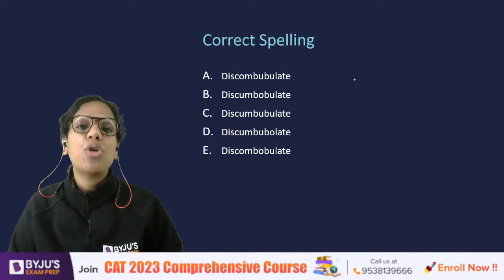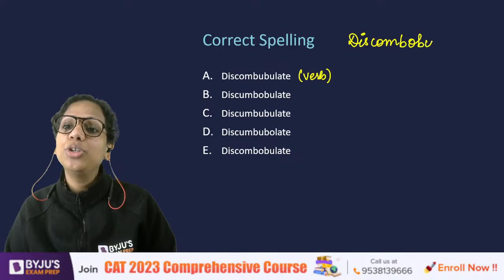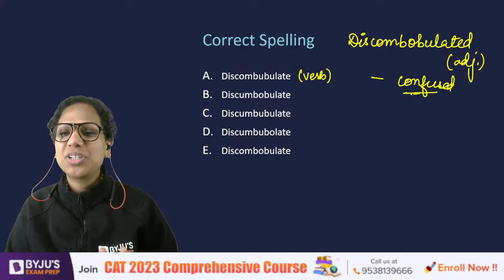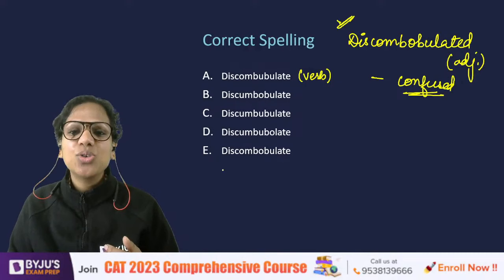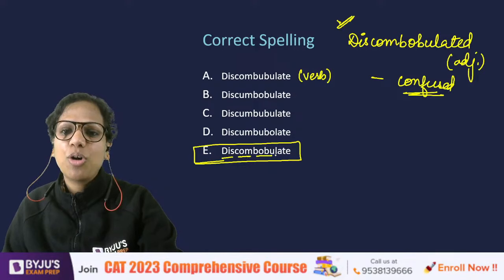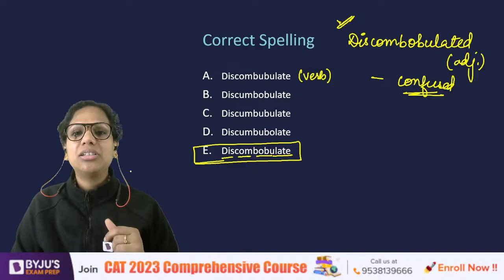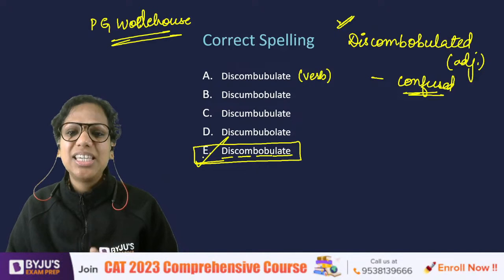Spelling questions are 10-second questions in the exam. Discombobulate is not a high-frequency word; you'd find it in older novels like P.G. Wodehouse. Do practice difficult spellings — they did appear in last year's exam. The answer is E. Do practice such questions.